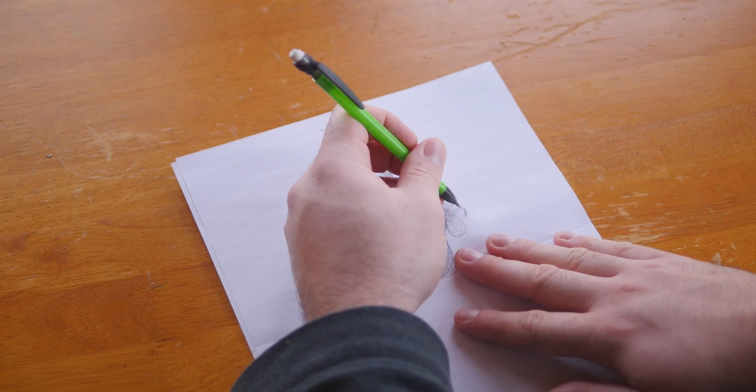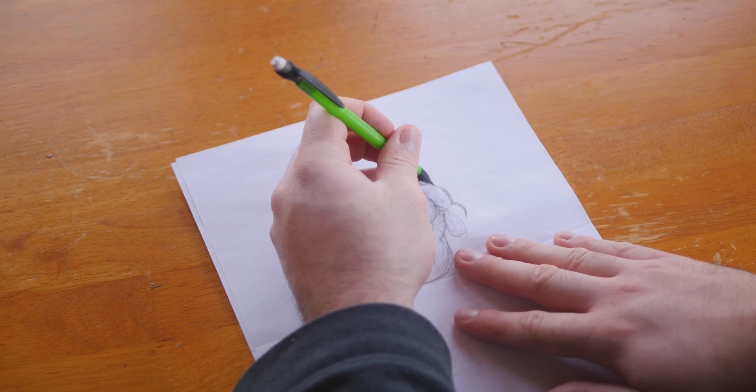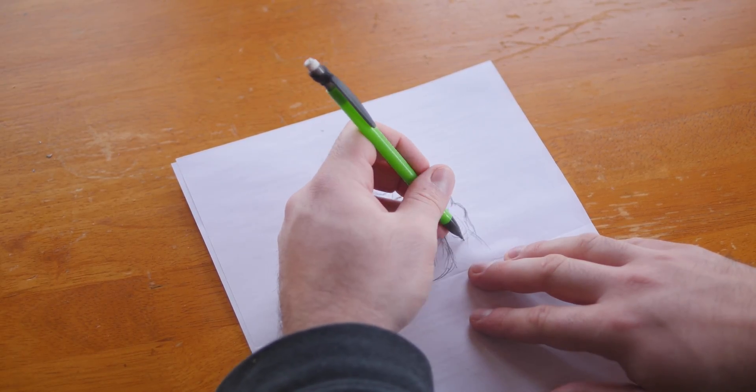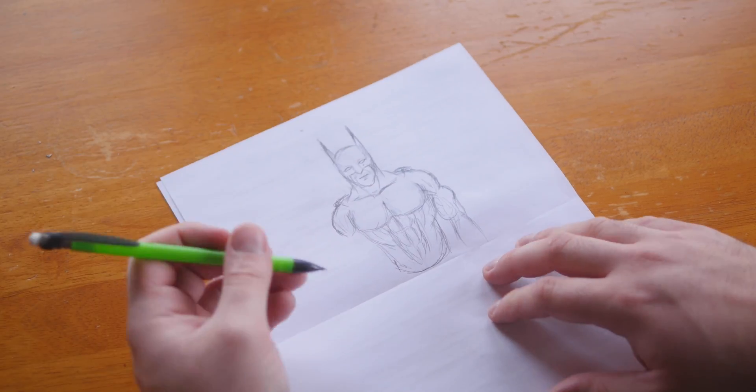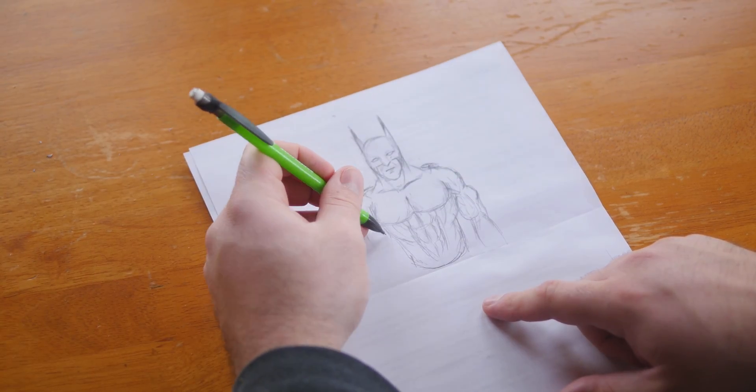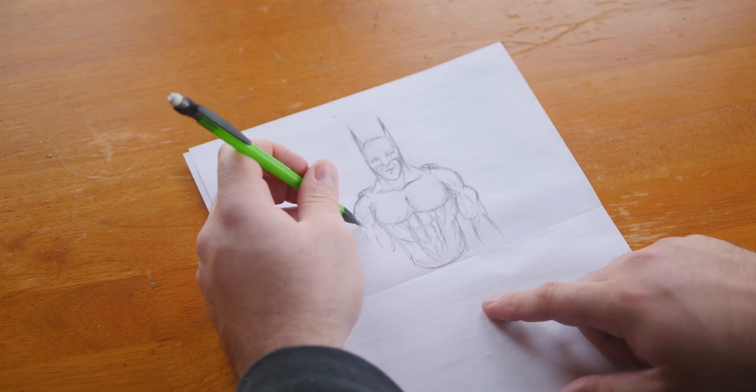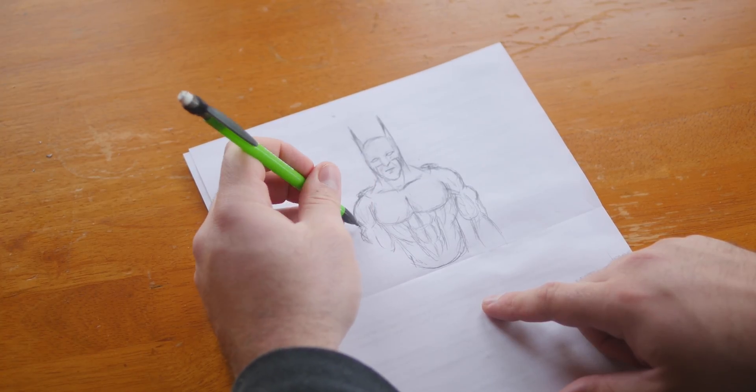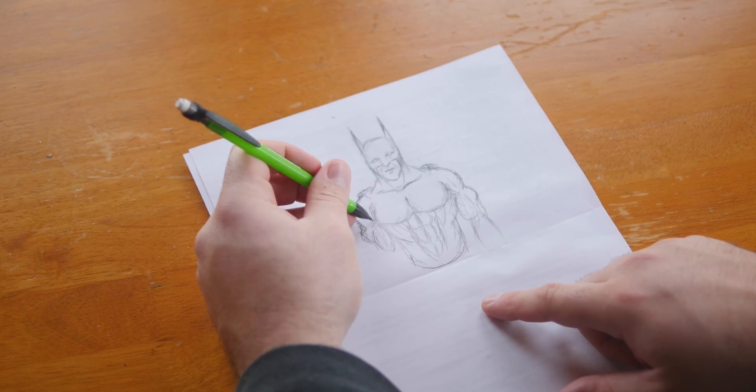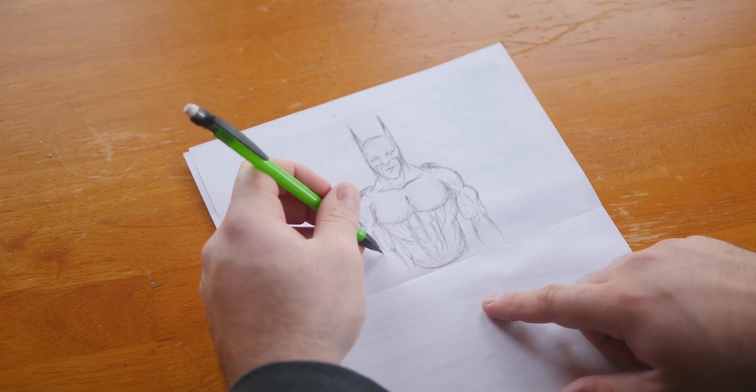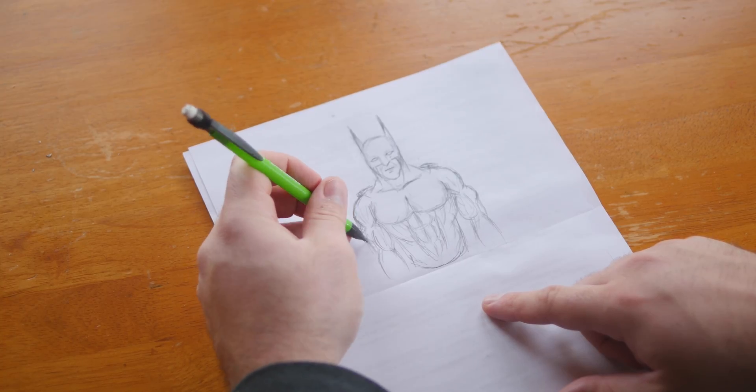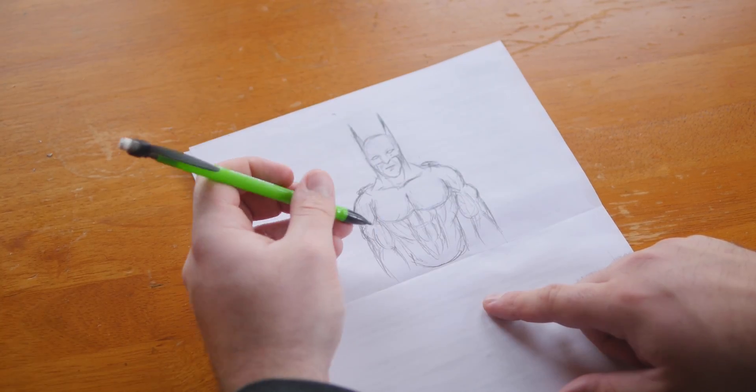Biceps. Triceps. Now let's have the forearm kind of come out of the bicep. It makes it look nice. All right. There we go. These arms are a little crazy, but we'll have to do.